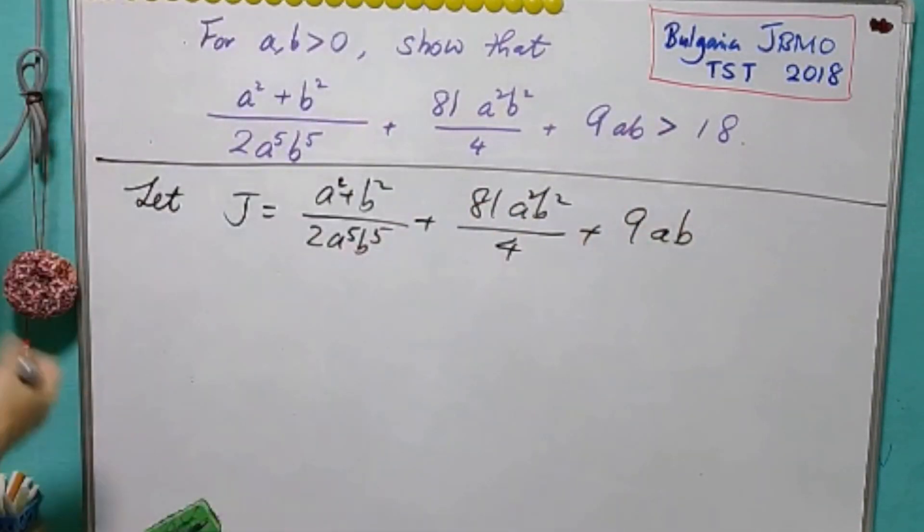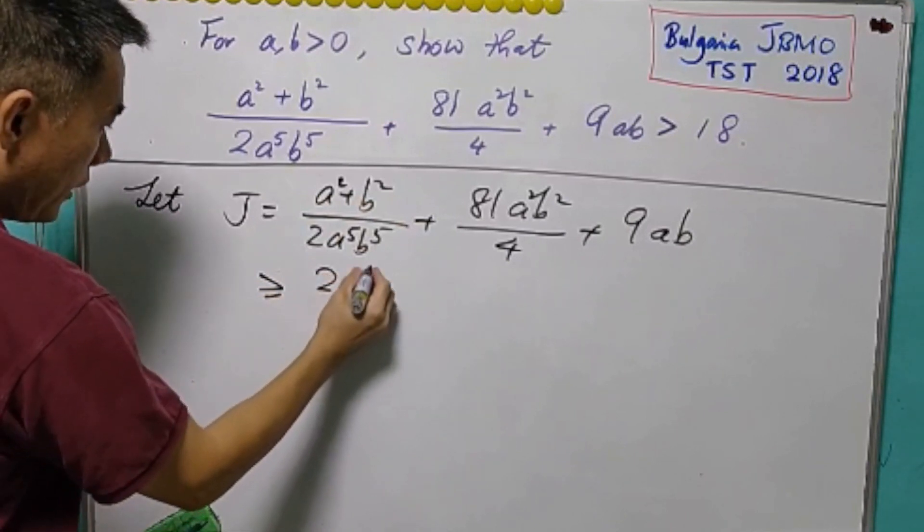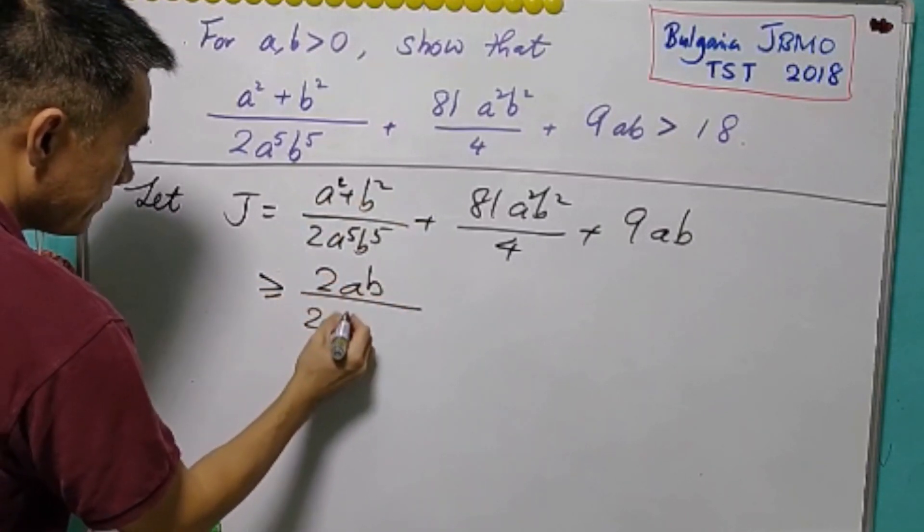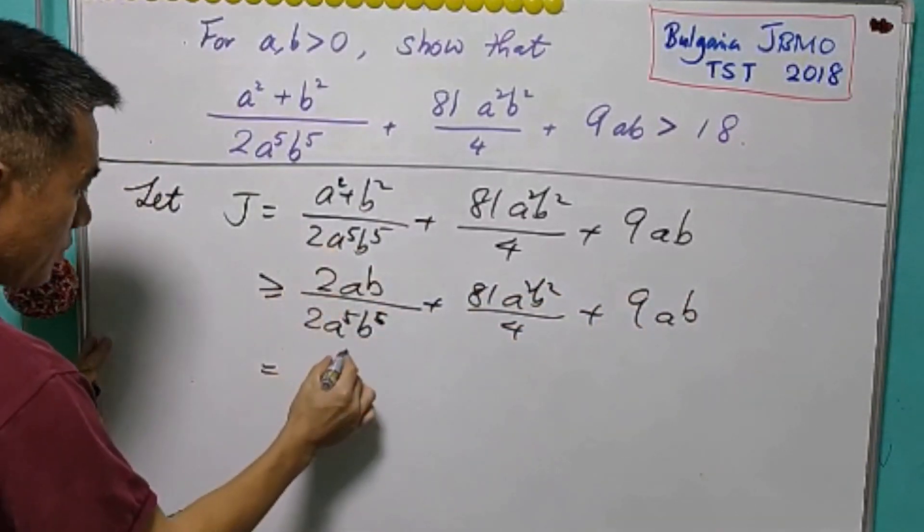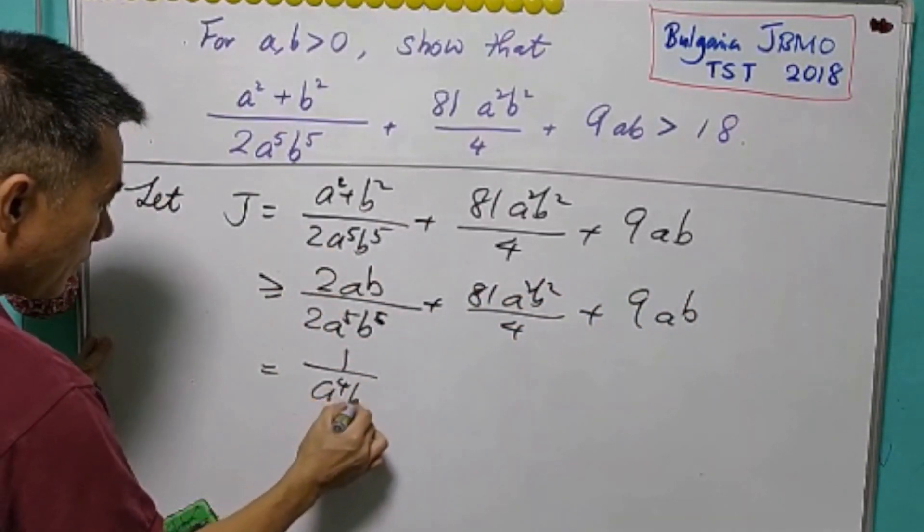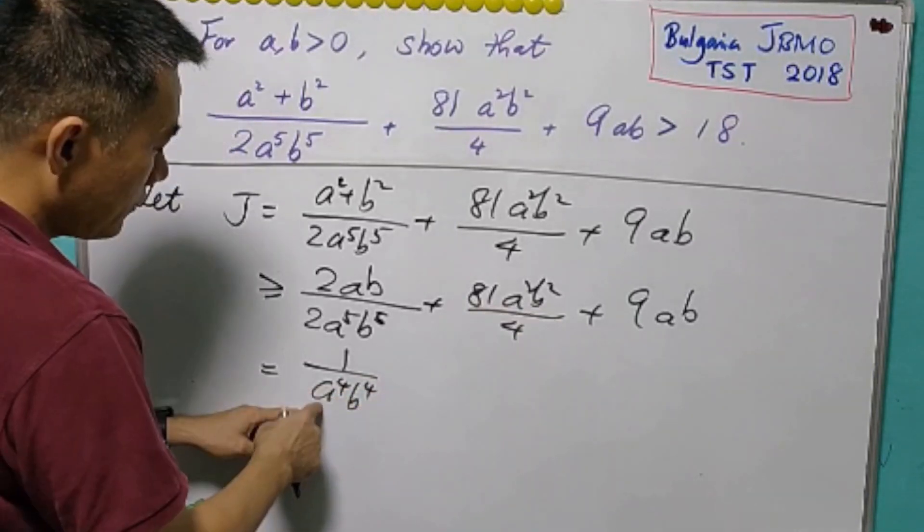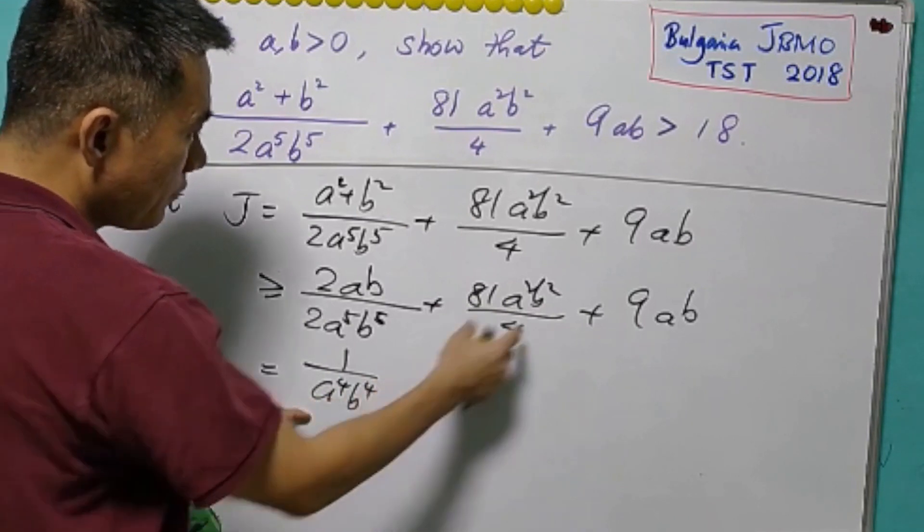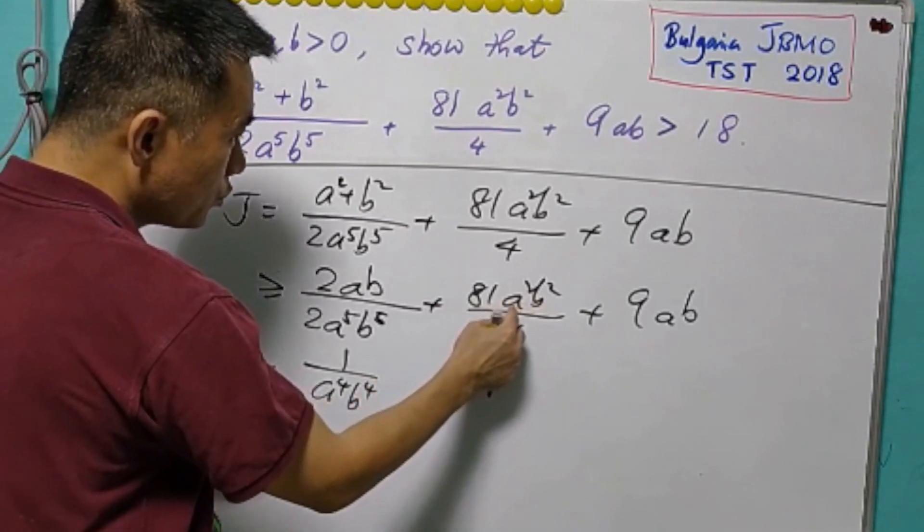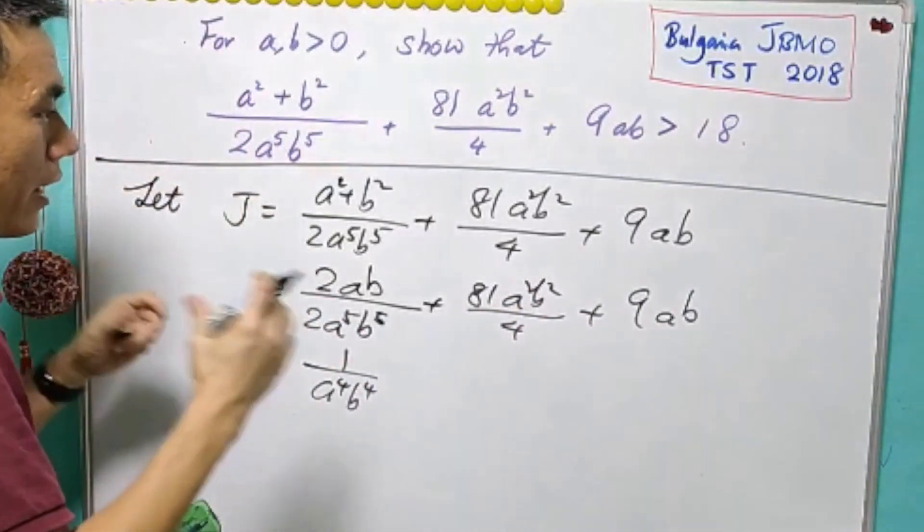And we know that a² plus b² will be greater than or equal to 2ab. And for the first term, we see that it is equal to 1 over a⁴b⁴. For the denominator, the power of a is 4. For the numerator, the power here is 2 and 1. So we need to do something so that they have equal power.